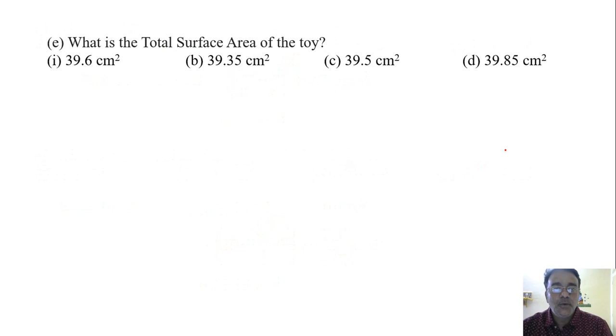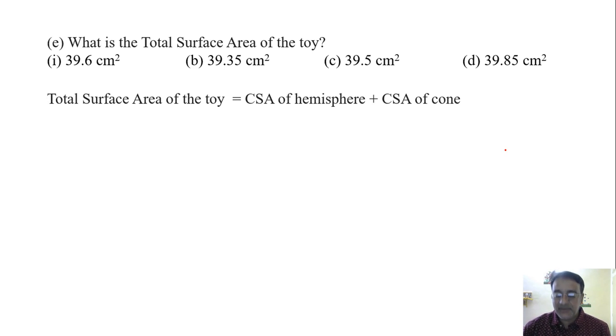The last question: what is the total surface area of the toy? It's the curved surface area of the hemisphere plus the curved surface area of the cone. From the previous questions, that's 19.25 plus 20.35, which equals 39.6 cm². So option A is the correct answer.